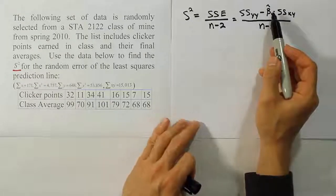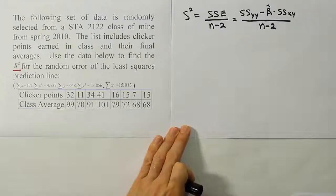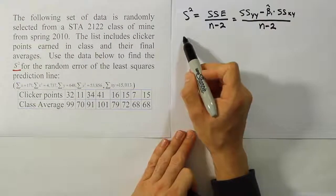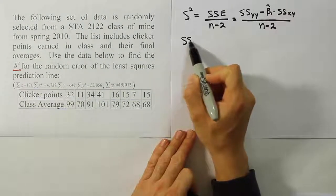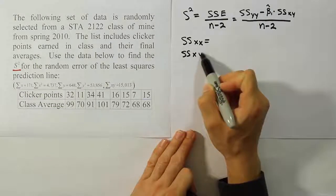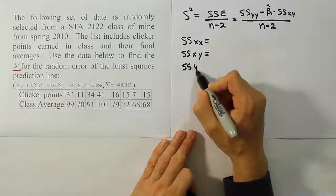Keep in mind that beta 1 hat requires us to know SSXX. So let's calculate those three sum of square values that we always need for the problems. We're going to need SSXX, SSXY, and SSYY.